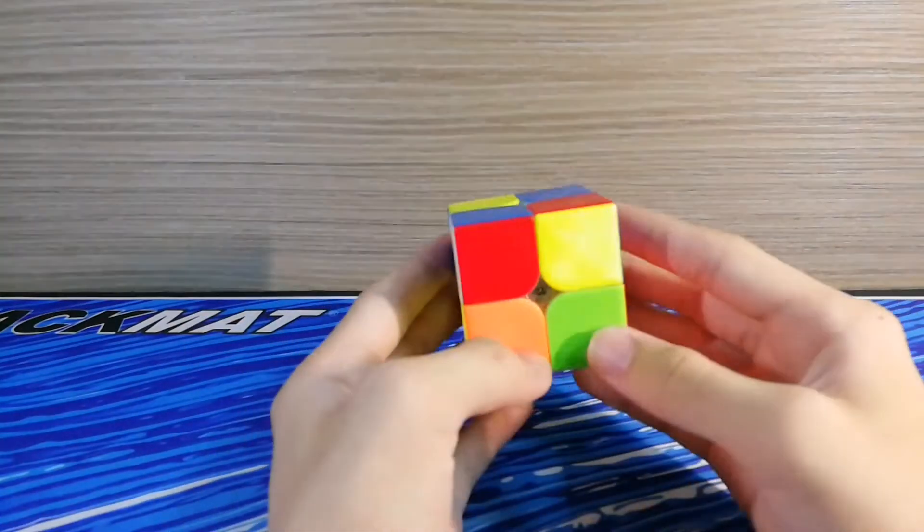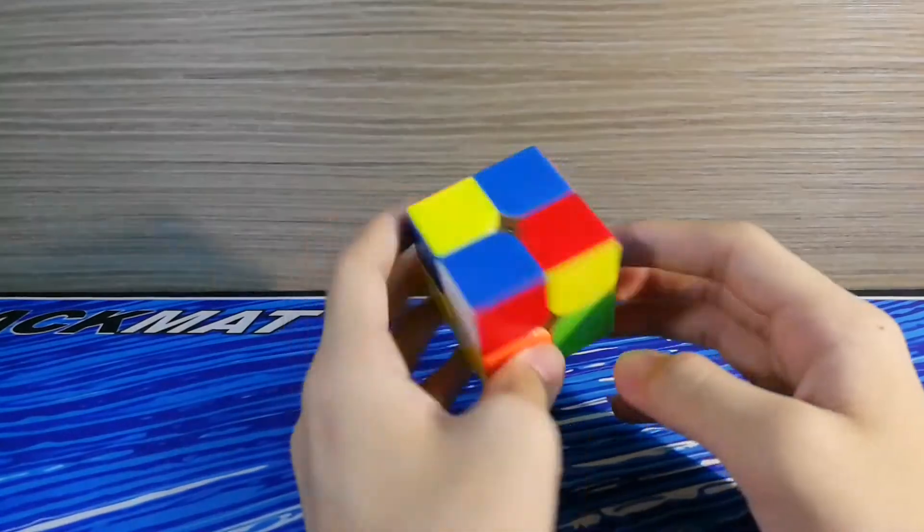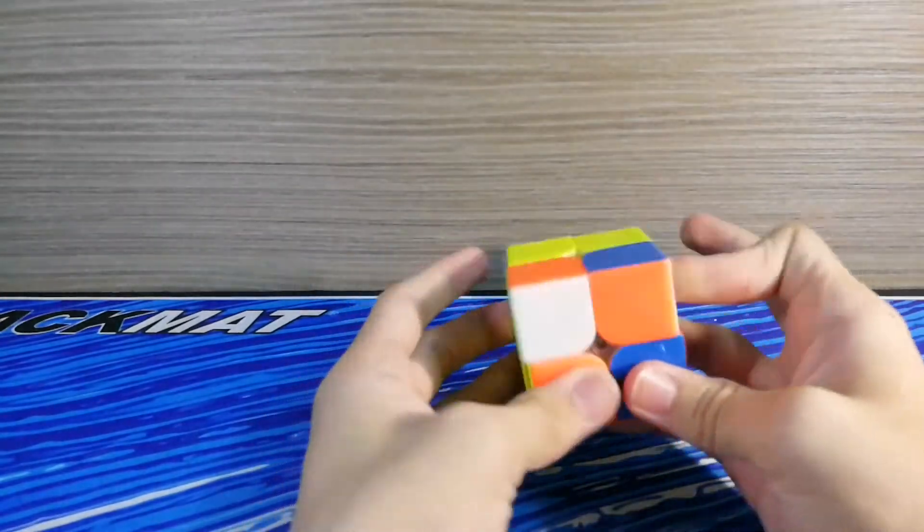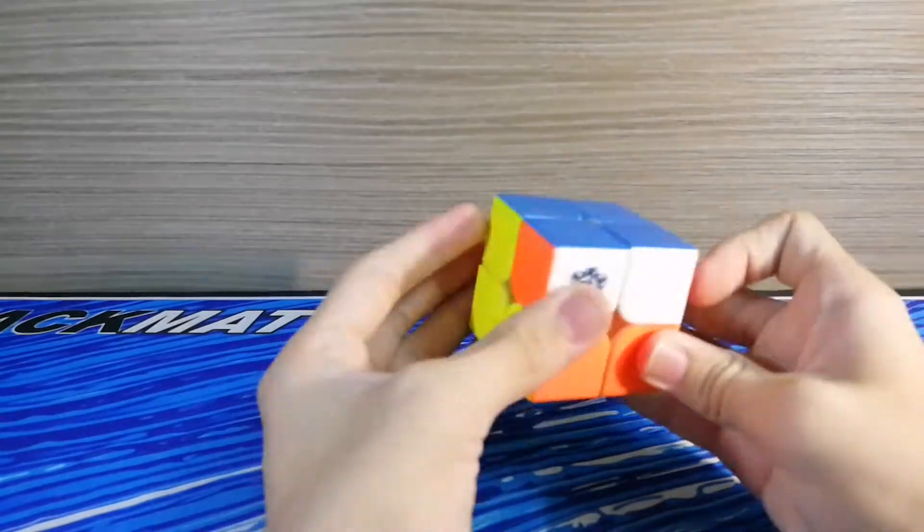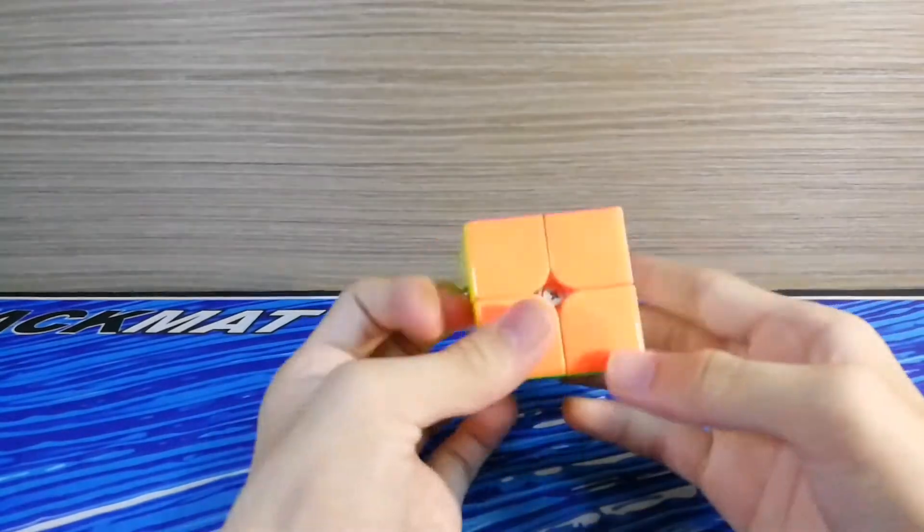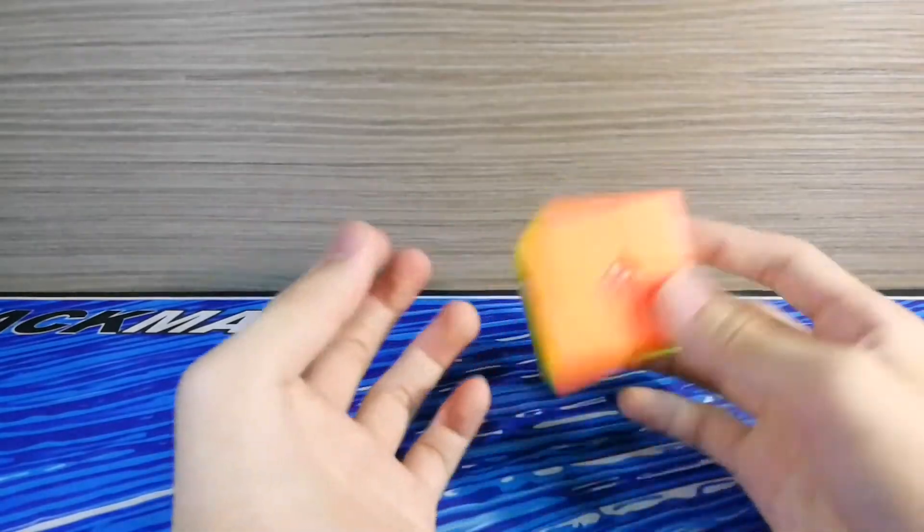Alright so here's the 3rd solve. Wow, 3rd solve is very lucky. I'm gonna just insert this and then do this, and I can do a j'prim. Oops, AUF wrong. Yeah.